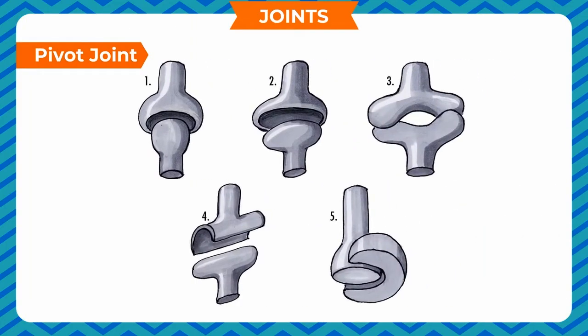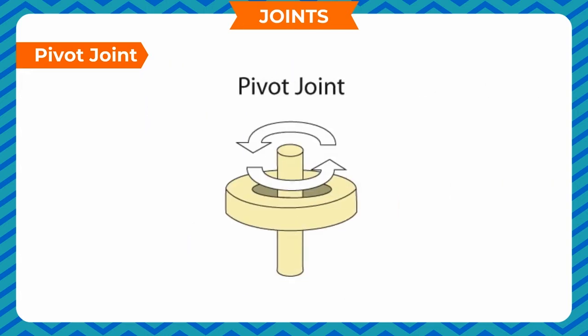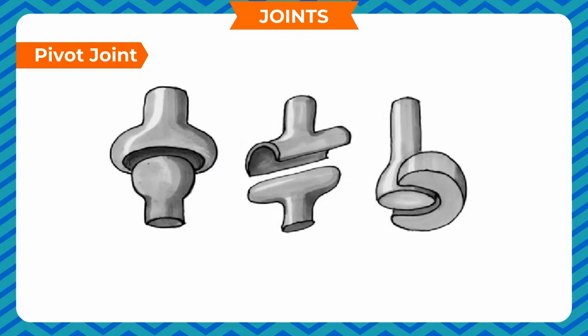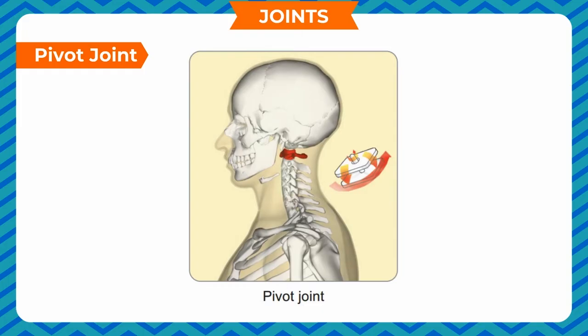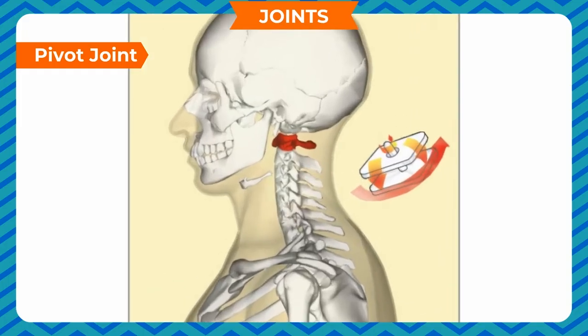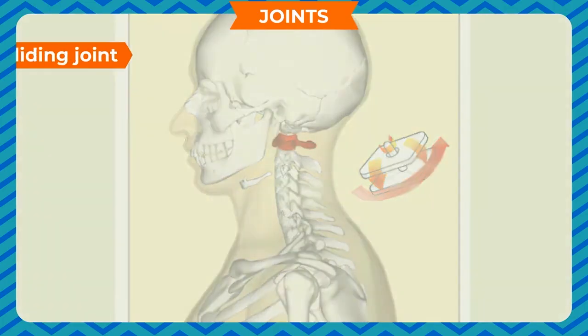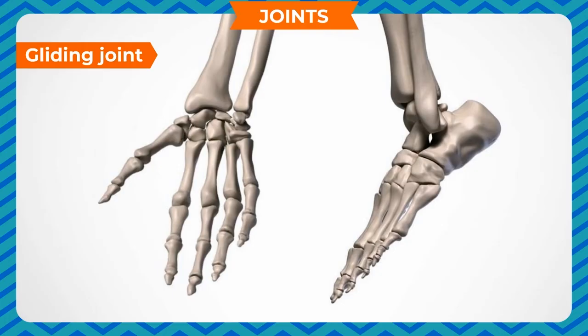Pivot joint: The rounded structure of one bone fits into the ring-like structure of the other bone, and the first bone is capable of free movement about the other. The neck joint allows movement in most directions — it allows you to move your head up and down, left and right, and to rotate. Location: neck.